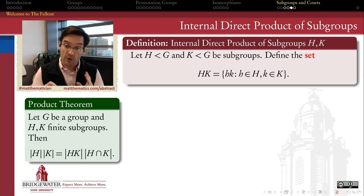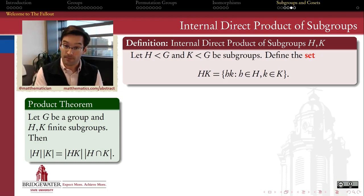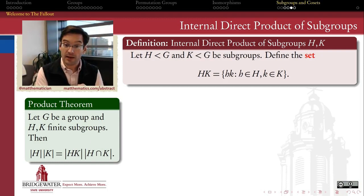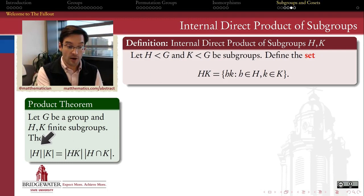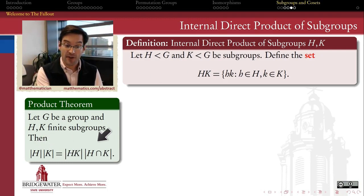What we're going to do in this video is prove the product theorem, which is a way of counting the elements in HK, the internal direct product. It tells me that there are as many elements in this direct product HK as there are the product of the orders of H and K separately, divided by the order of the intersection of H and K.